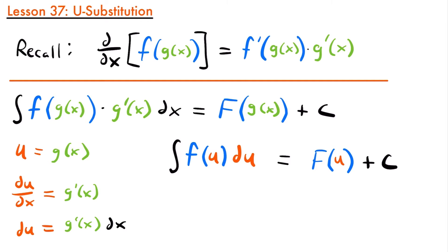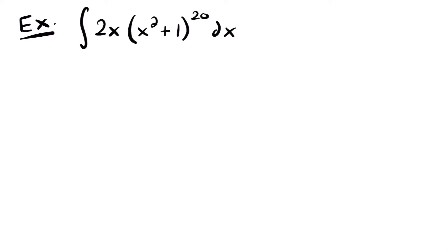While this might seem a little confusing right now, it's going to make a lot more sense with an example. Here's our first example: the integral of 2x times the quantity (x² + 1) to the 20th power dx. We need to use u-substitution to solve this indefinite integral because we have a composite function — x² + 1 to the power of 20 — within our integrand.